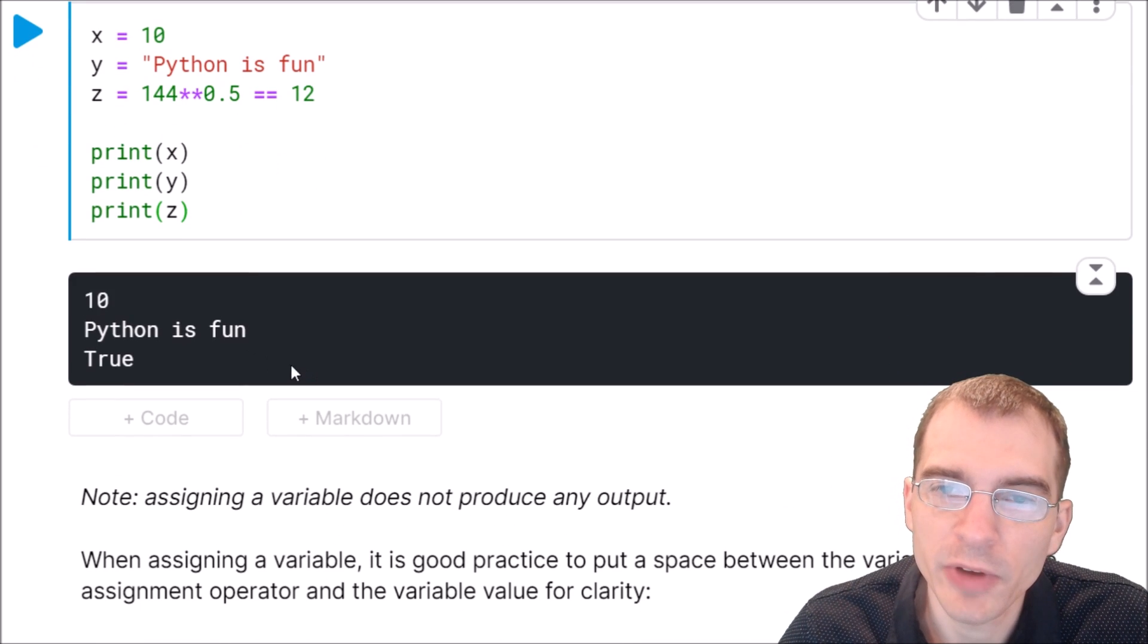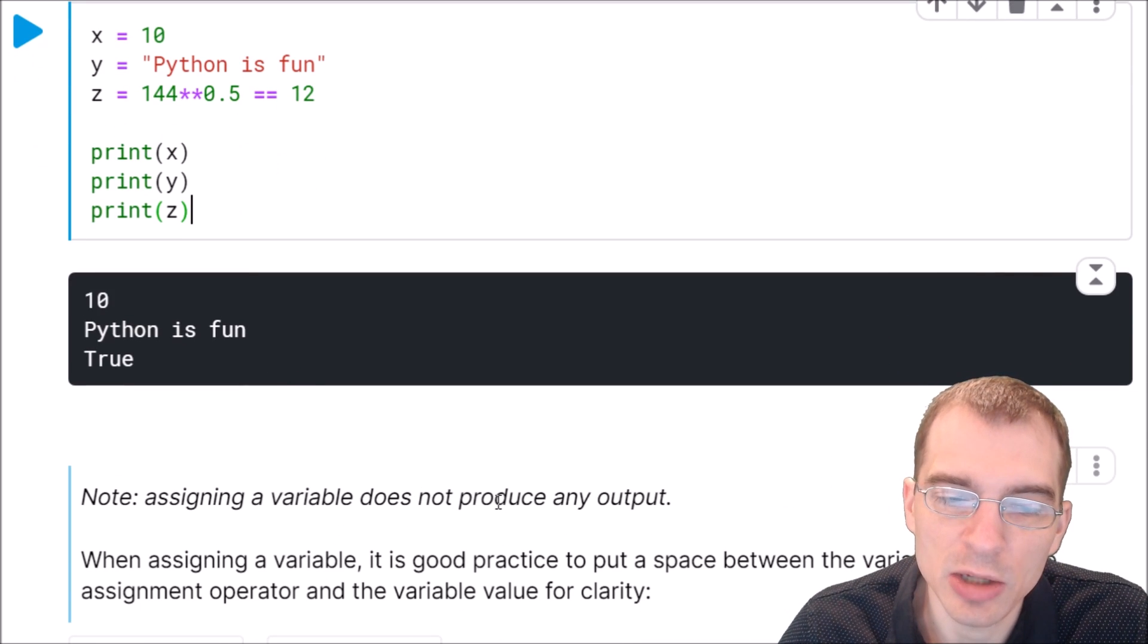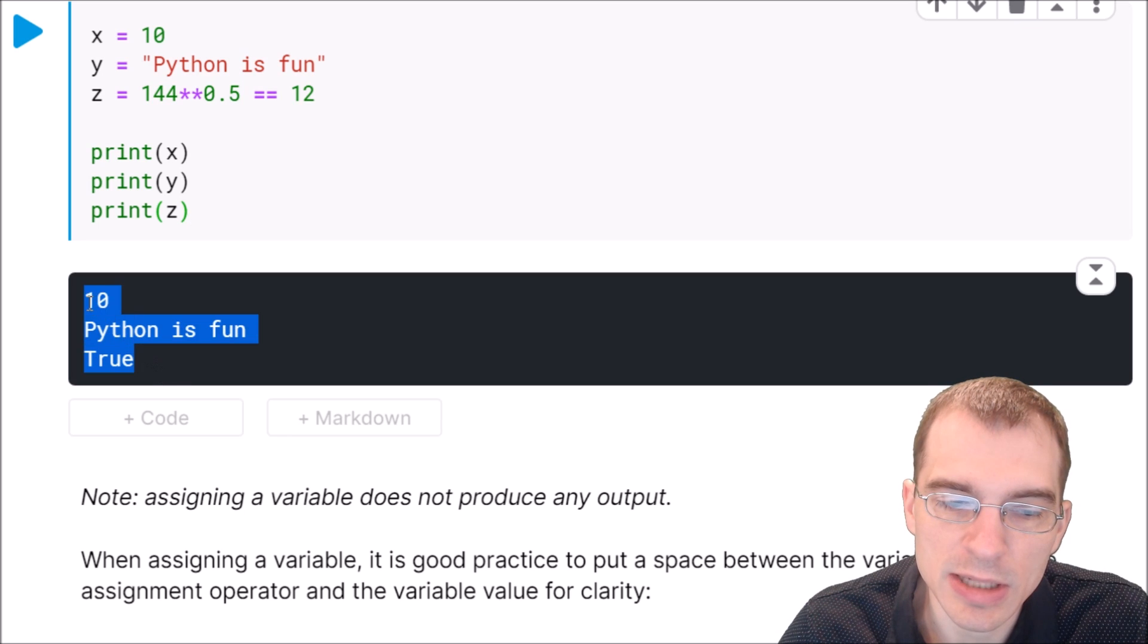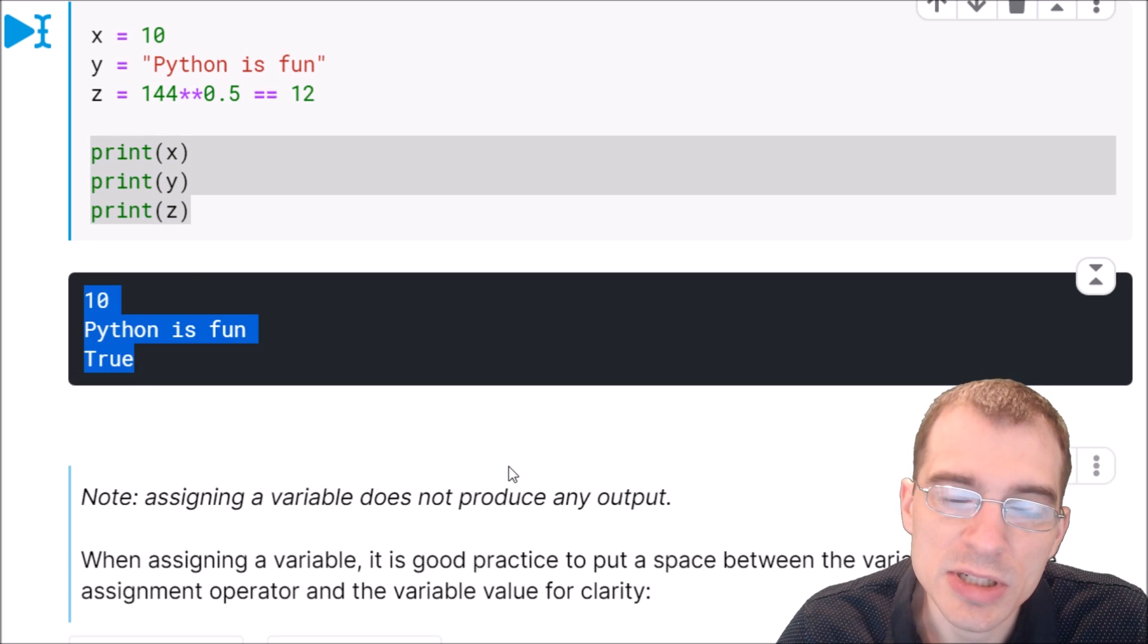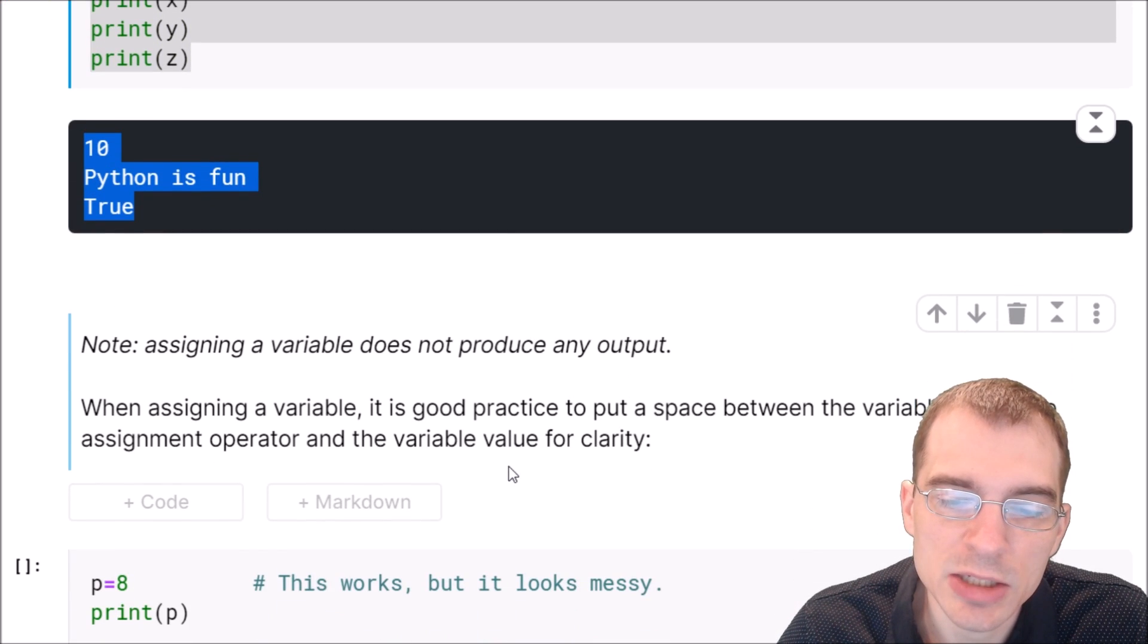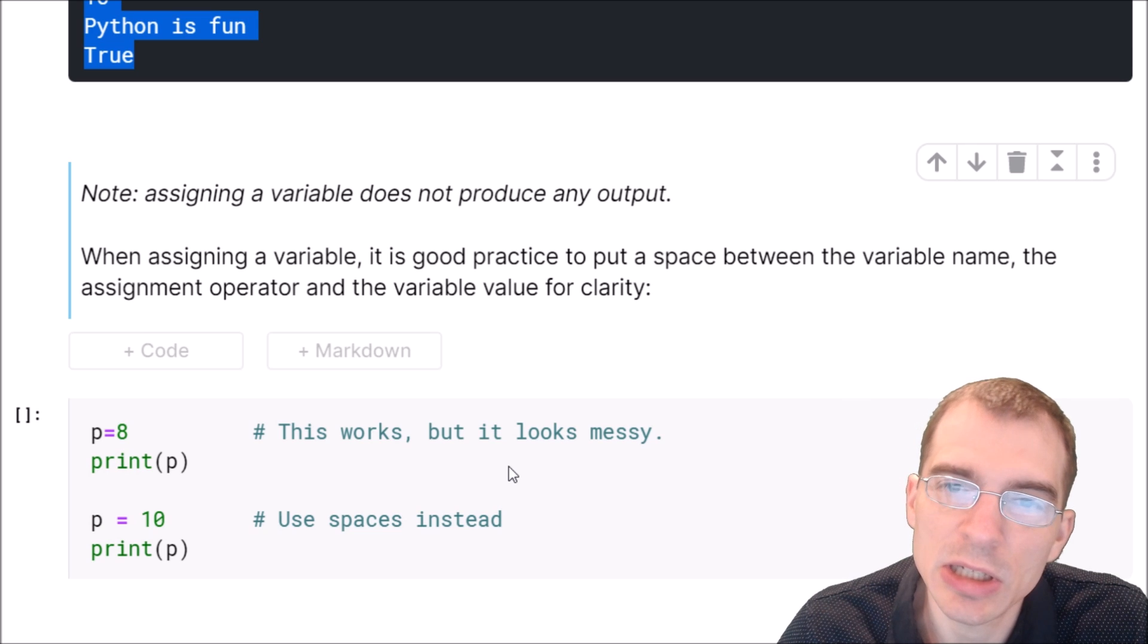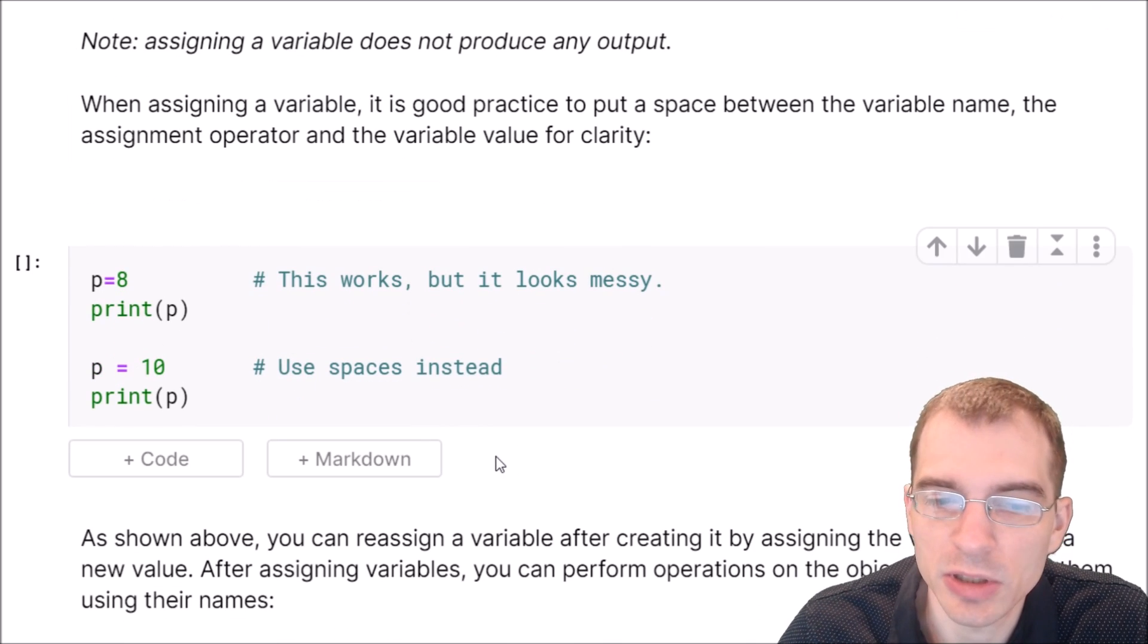Note that assigning a variable doesn't actually produce any output. In order to see this output here we had to use this print statement on each of the variables we assign. When assigning a variable, it's good practice to put a space between the equal sign and the variable name and the value just for clarity's sake.